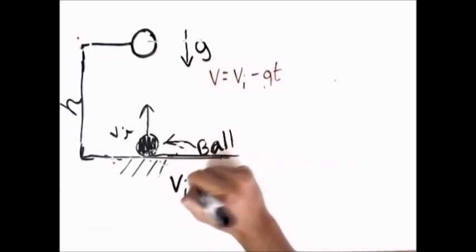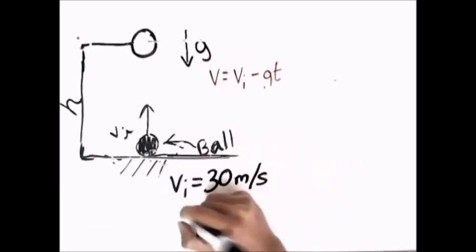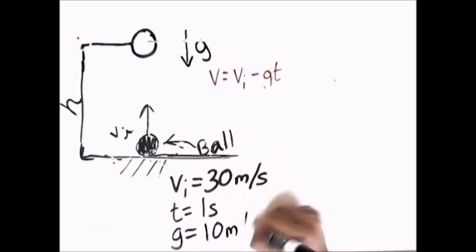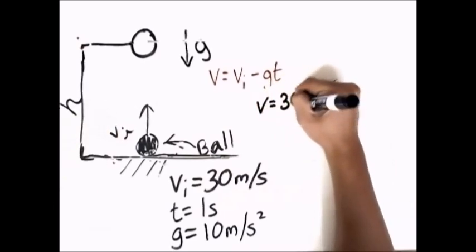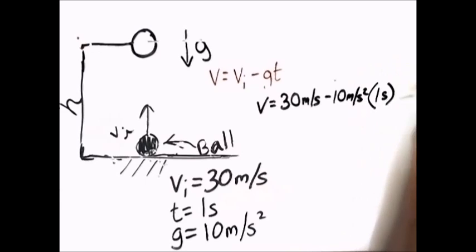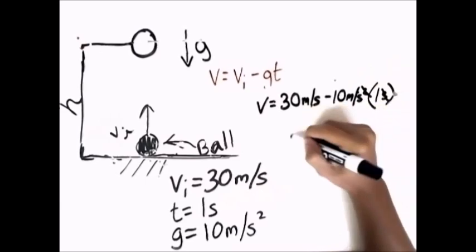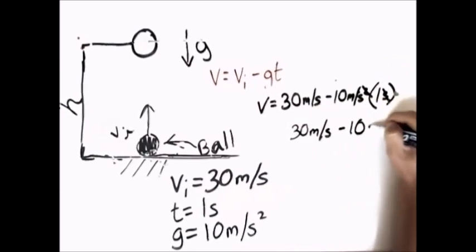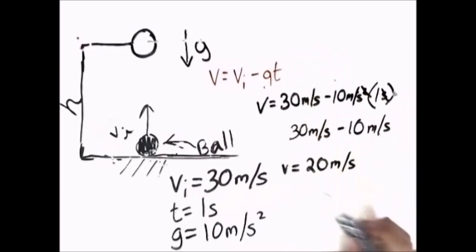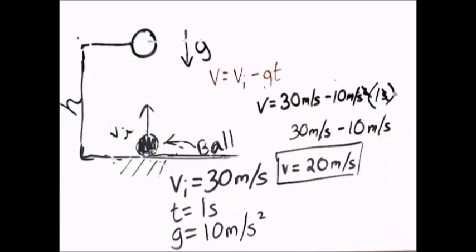Let's do a sample problem. Our initial velocity is 30 meters per second, and we want to find the velocity after one second. For simplicity, our acceleration is 10 meters per second squared. Plugging in: v equals 30 m/s minus 10 m/s² times 1 second, which gives v equals 30 minus 10, so v equals 20 meters per second. This proves the speed decreases — it started at 30 and at one second it was 20.